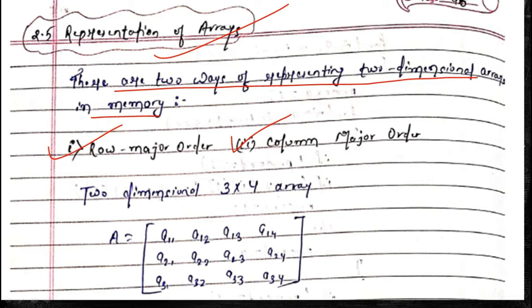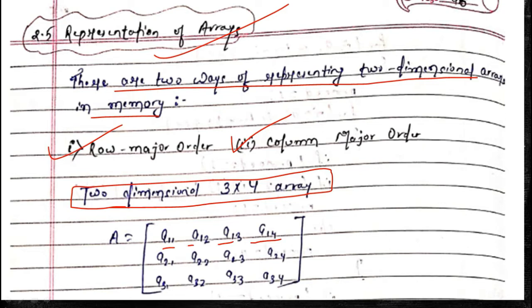Consider a two-dimensional array of order 3x4, with elements a[1][1], a[1][2], a[1][3], a[1][4], a[2][1], a[2][2], a[2][3], a[2][4], and so on. There are three rows and four columns — a 3x4 array.